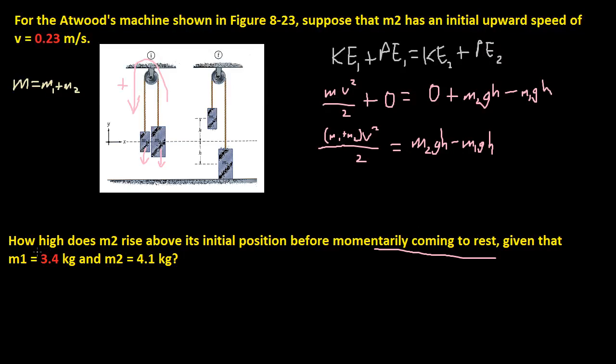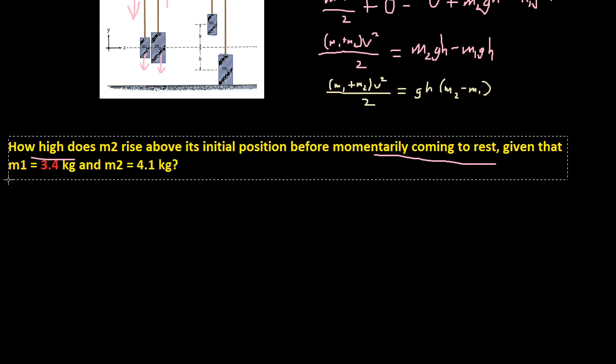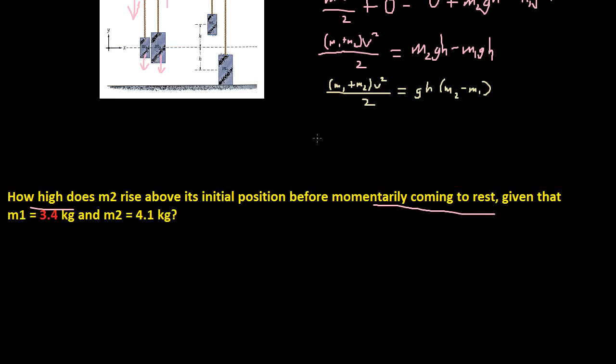Okay, now what do we do? Well, we just, and it's asking for height, so we just solve for height. Okay, so it's going to be M1 plus M2, V squared over 2, is equal to, we can factor out G and H. So GH M2 minus M1, because GH times M2 is this, and then GH times M1, negative M1 is this. Okay, move this down a little bit, and then we can divide each side by G and M2 minus M1 to get H.